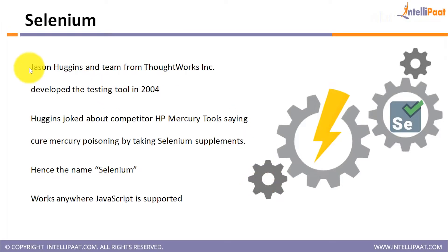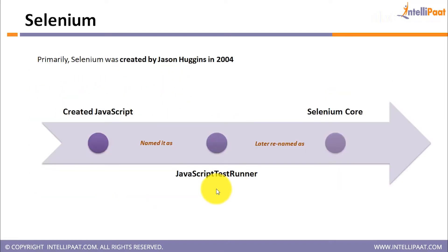Selenium was invented by Jason Huggins and his team from ThoughtWorks in the year 2004. There's a story about why it was named Selenium — Mercury was considered a poison, and a remedy to it was selenium. Keeping that aside, the Selenium automation tool was designed by Jason and his team members.